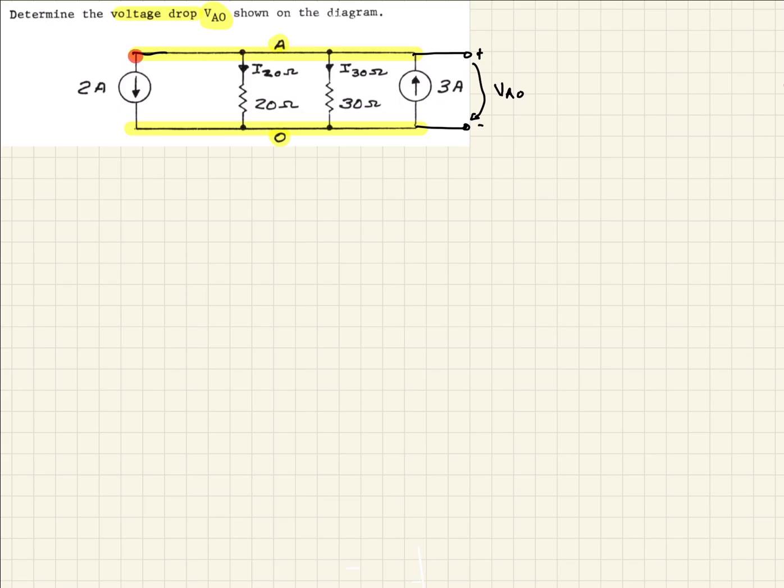The first branch we see is this branch here, and we see that that is a 2 amp source and it's leaving A. So we're going to call that positive 2.